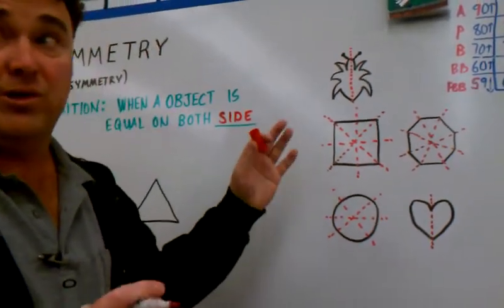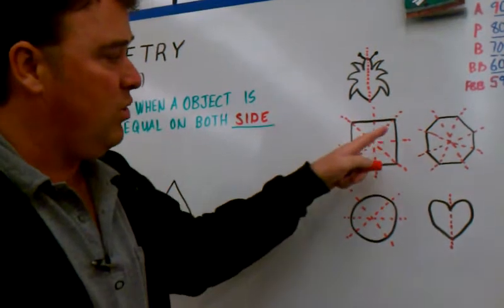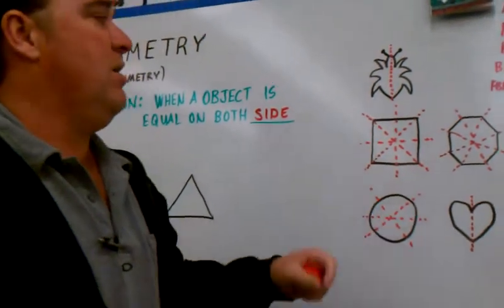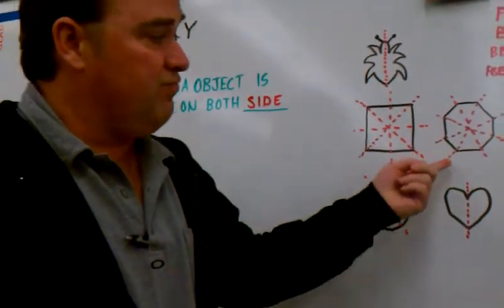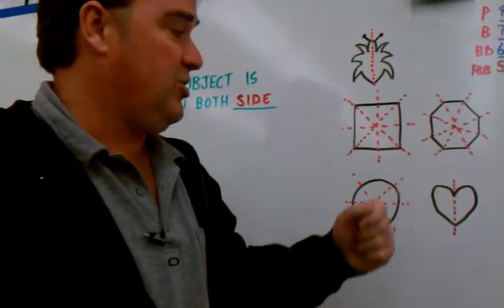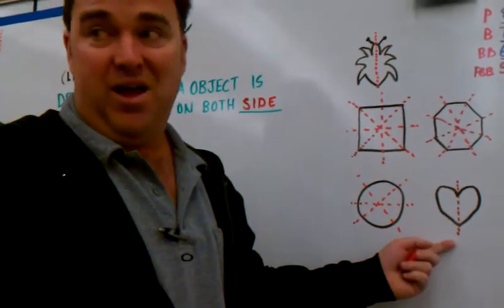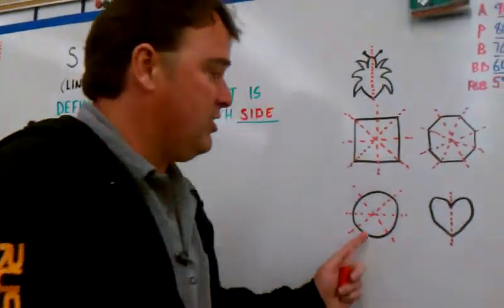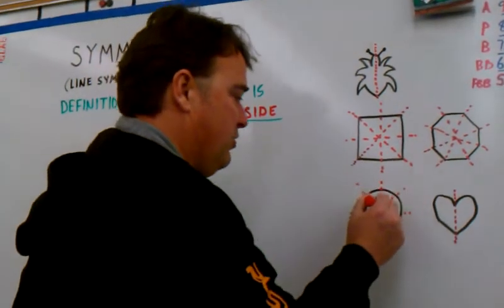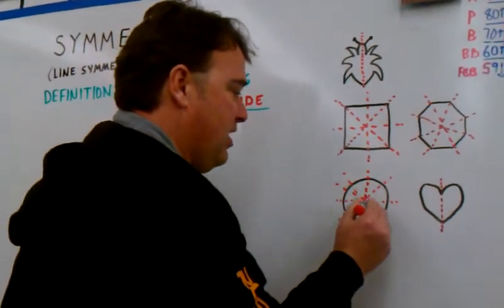Whereas the square polygon can be folded in one, two, three, four different ways. The octagon can be folded in many ways. The heart can only be folded down the middle. The circle can be done in so many ways—an infinite amount of lines of symmetry.